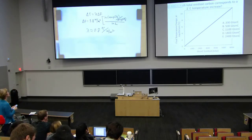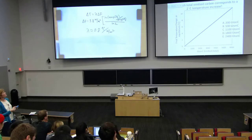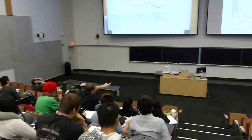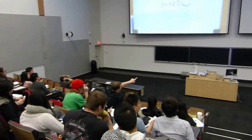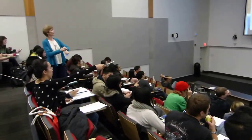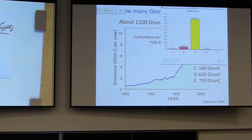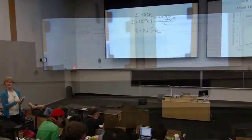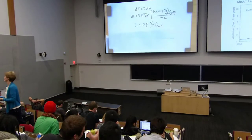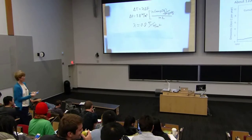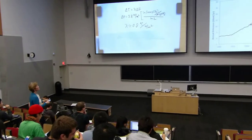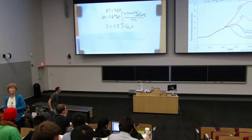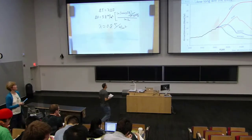Just a couple of really quick clicker questions. How much total carbon corresponds to a two-degree temperature increase? Three, two, one. Okay, evidently everyone is ready for the next task — 60 gigatons left. So that should help you out with activity 2. This is dealing with the representative concentration pathways, which you read about for your pre-reading. Any questions about that? We'll post the worksheet and connect.